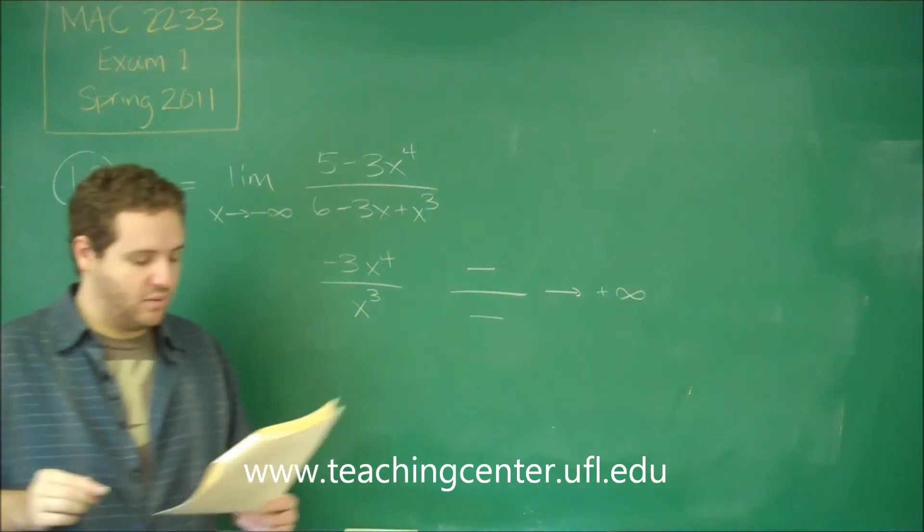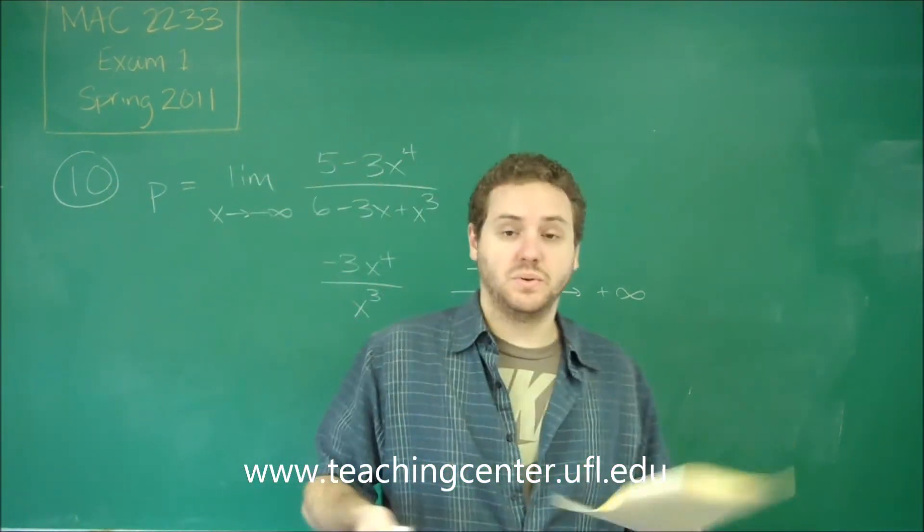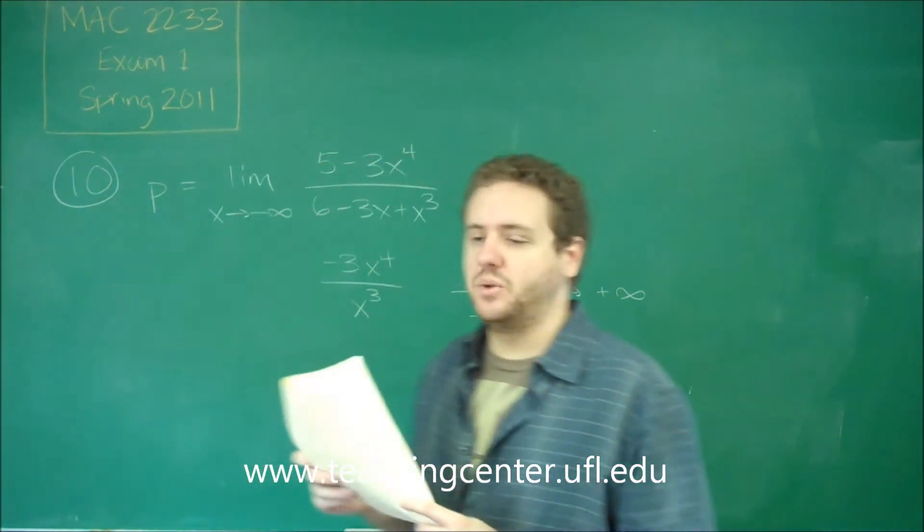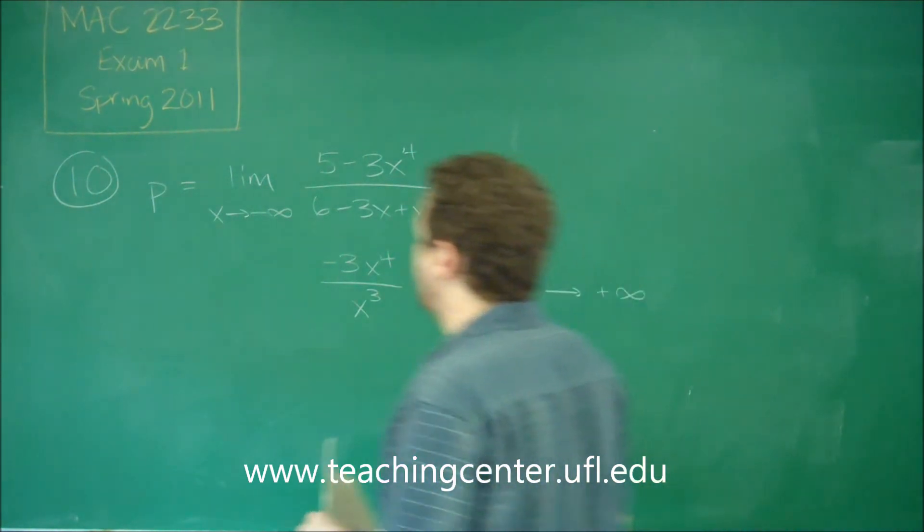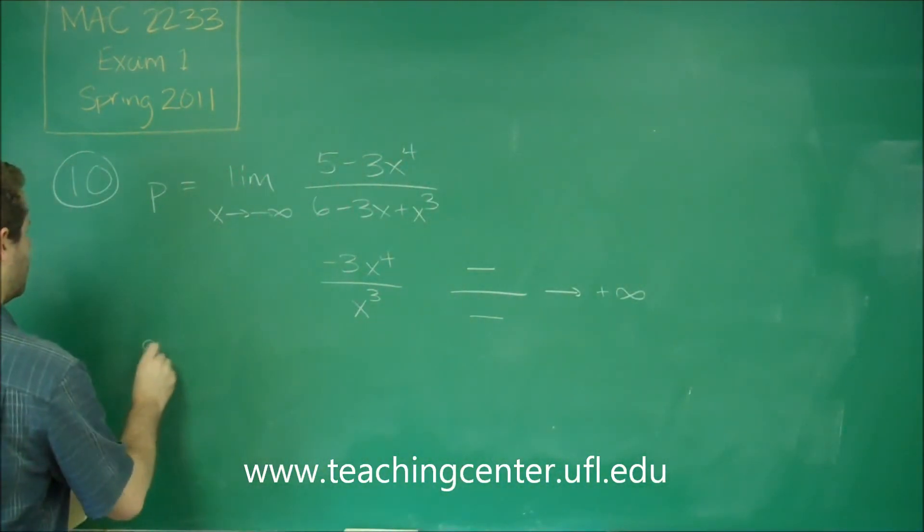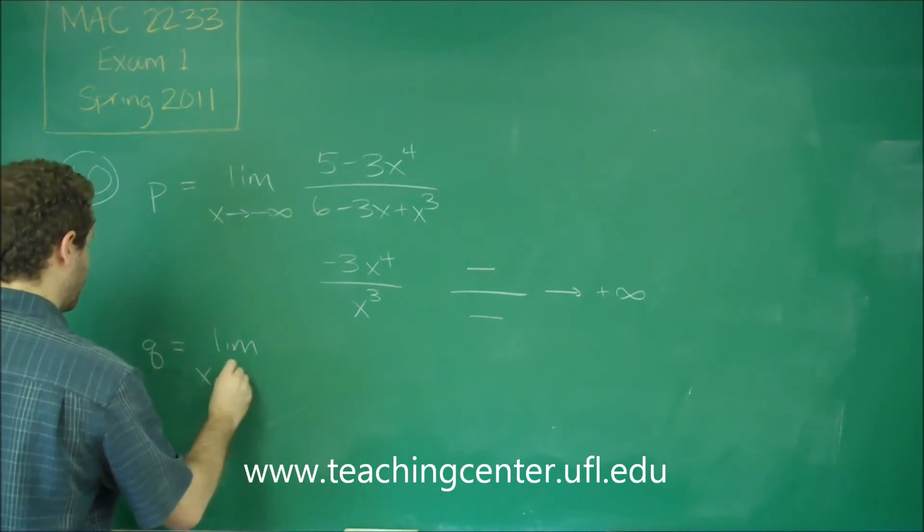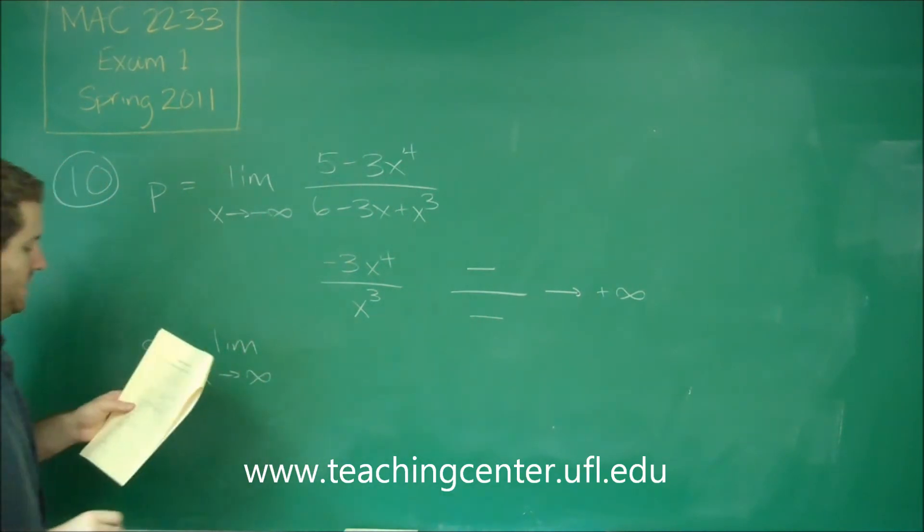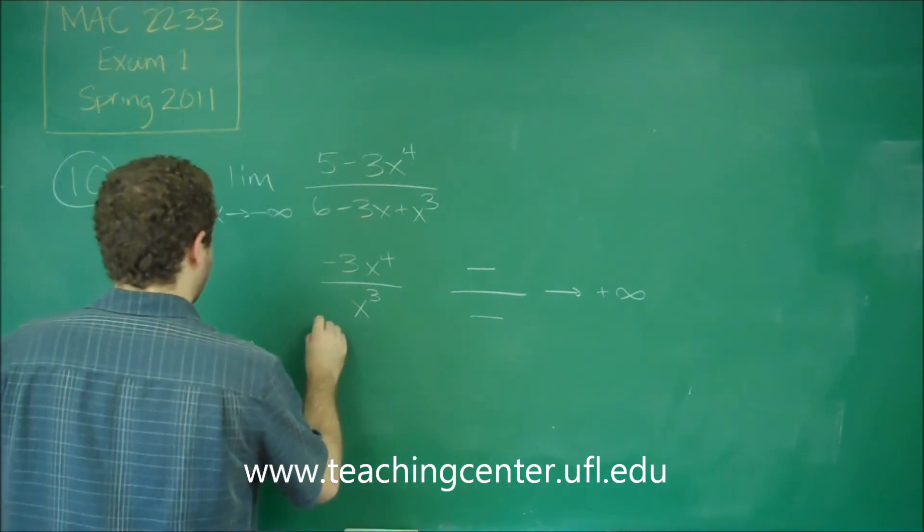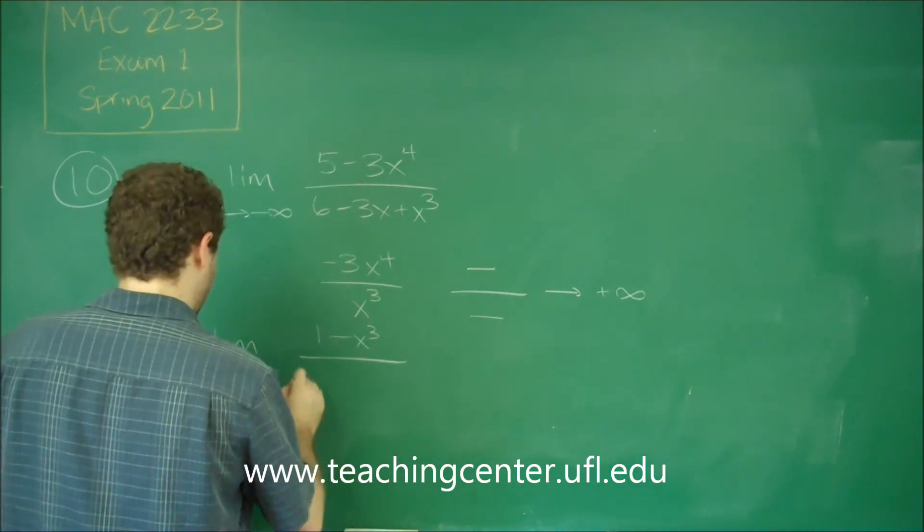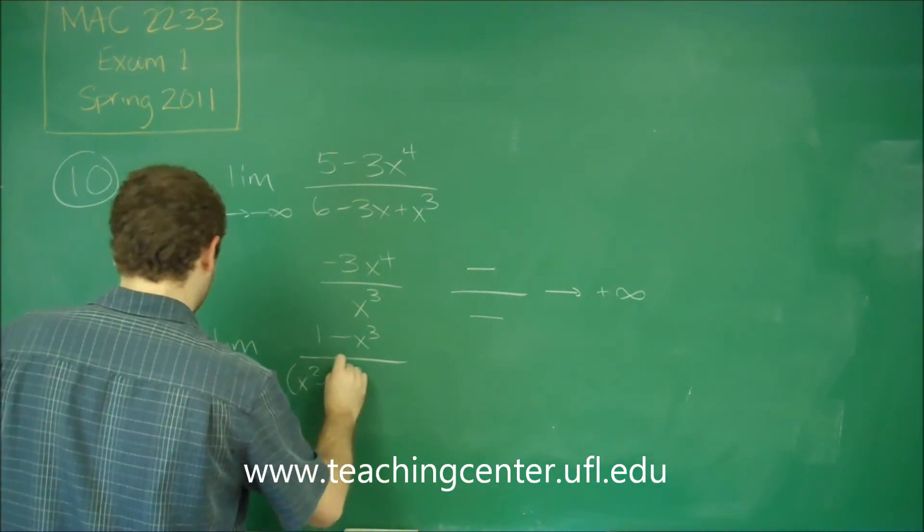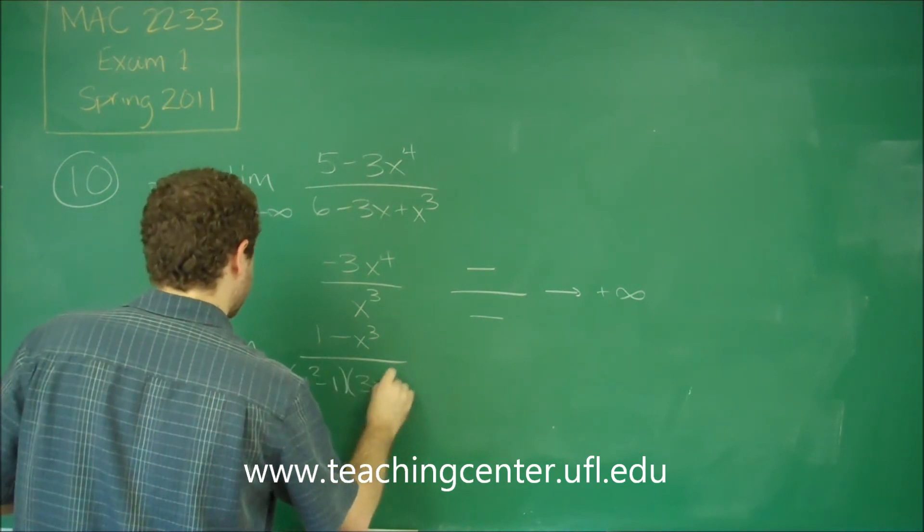So, actually right away, that only gives us one of the possible answer choices as a correct one. So let's evaluate Q as well. So Q is the limit as X approaches positive infinity. And we have 1 minus X cubed over X squared minus 1 times 3X plus 1.